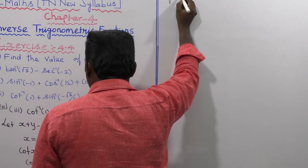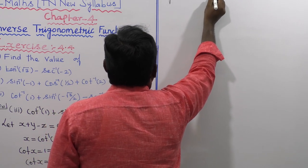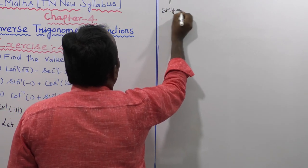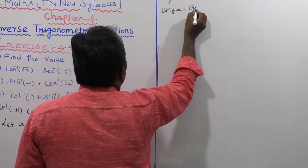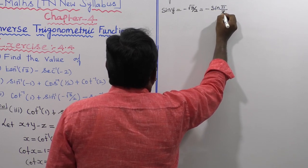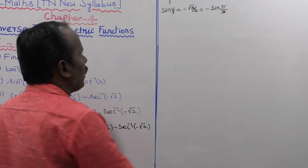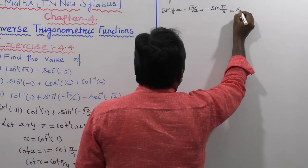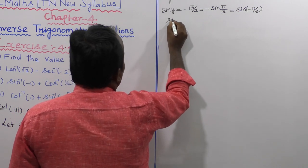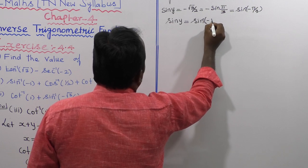Next, let us take the middle term: y is equal to sine inverse of minus root 3 divided by 2. Moving sine inverse to the right side, sin y is equal to minus root 3 divided by 2. Since root 3 by 2 corresponds to 60 degrees, this is equal to sin of minus pi by 3.